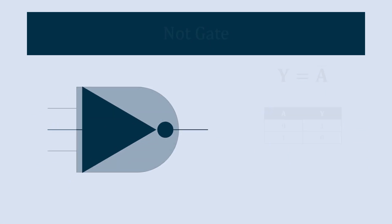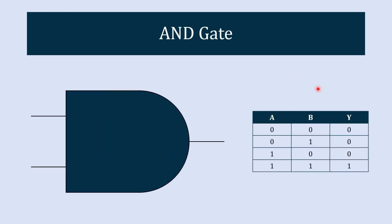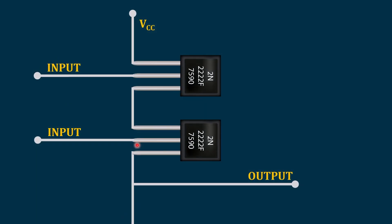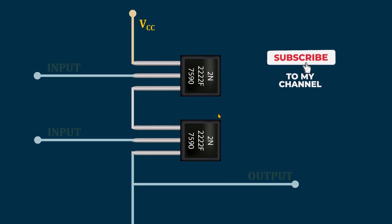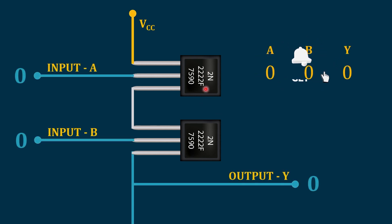The next gate we are going to understand is the AND gate. This AND gate performs the multiplication operation: 0×0=0, 0×1=0, 1×0=0, and 1×1=1. This AND gate is constructed using two transistors connected in series, where both transistors work as switches. When both inputs are 0, both switches act as open switches, so we do not get the VCC voltage in output — that is why the output is 0.